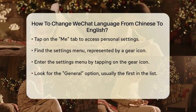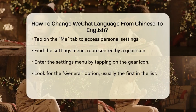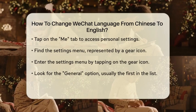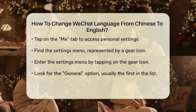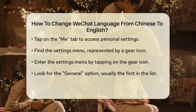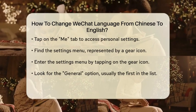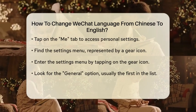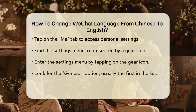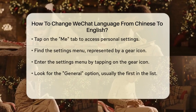Tap on the Me tab to access your personal settings. Next, navigate to the Settings menu. You will see several options listed. Look for the option that represents Settings, which may be indicated by a gear icon. Tap on it to enter the Settings menu.